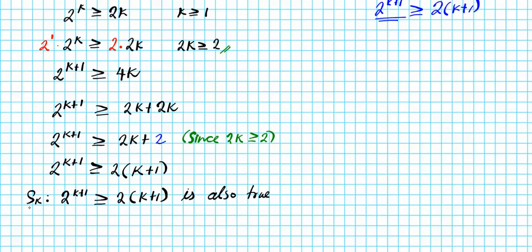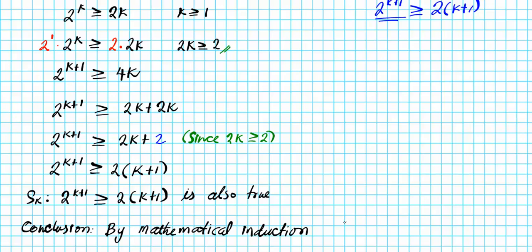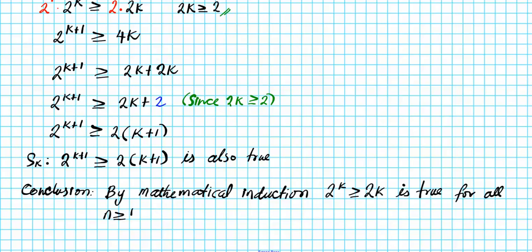So that was the inductive step. Our conclusion: by mathematical induction, the original statement — that 2 to the n is greater than or equal to 2 times n — is true for all n greater than or equal to 1. That's basically how you prove that inequality using mathematical induction.